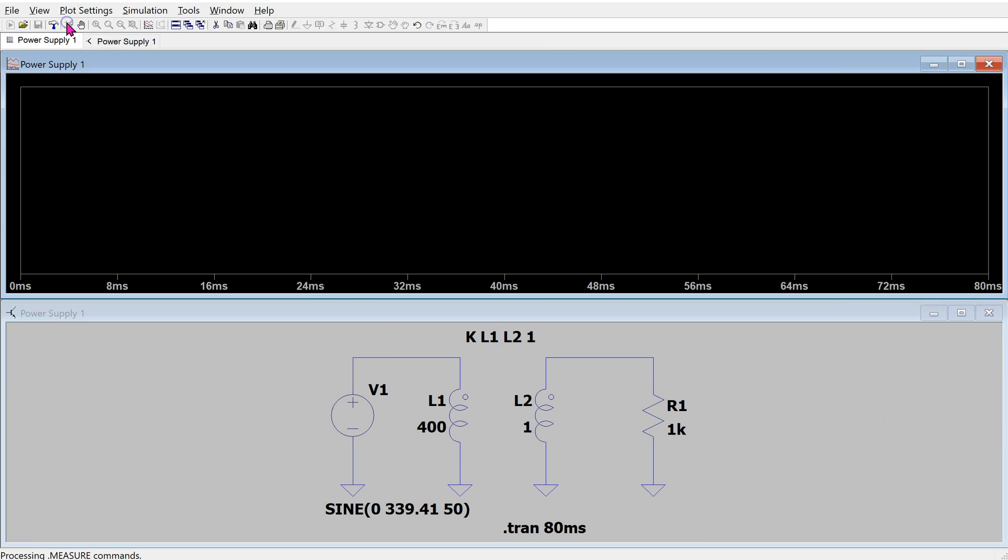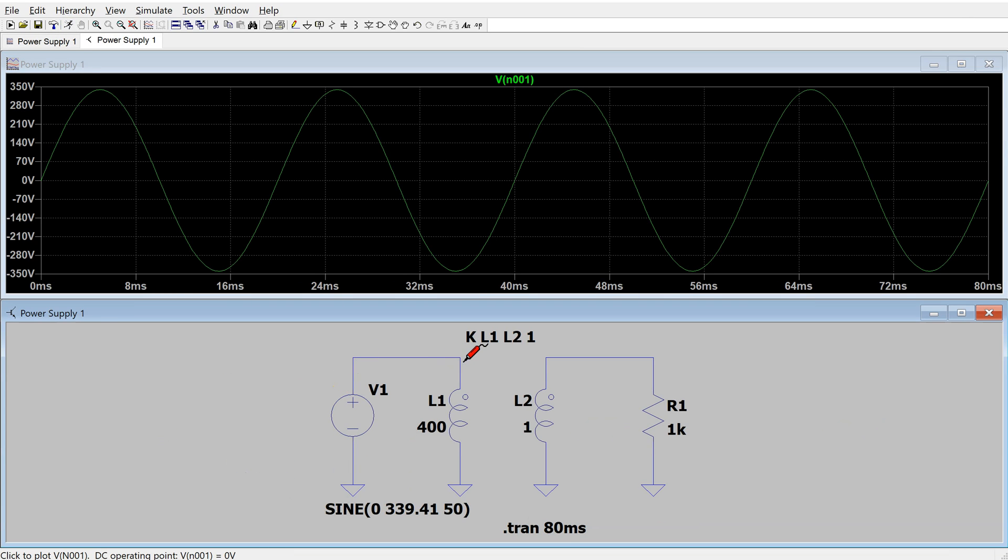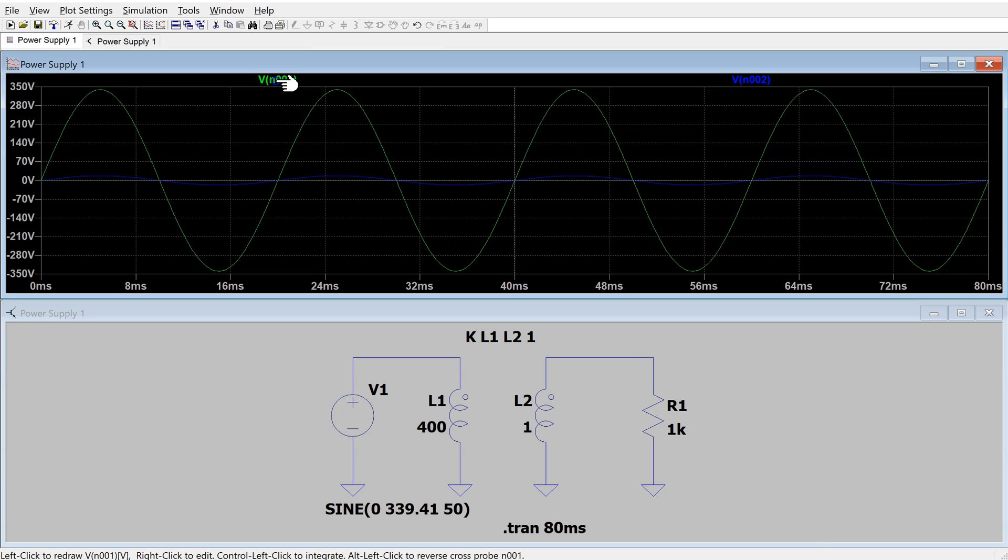When we run this simulation, we can look at the primary voltage and the secondary voltage. We can activate the cursor by clicking on any of these labels here.